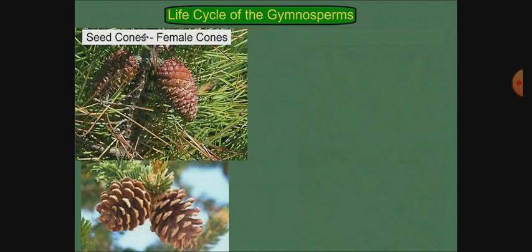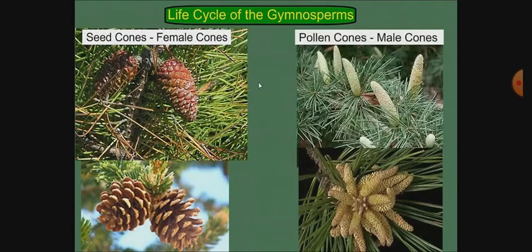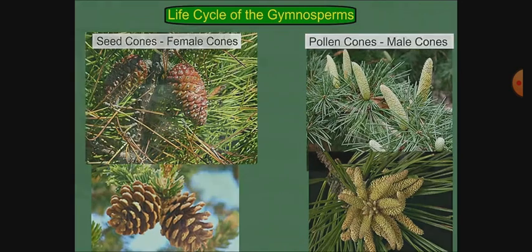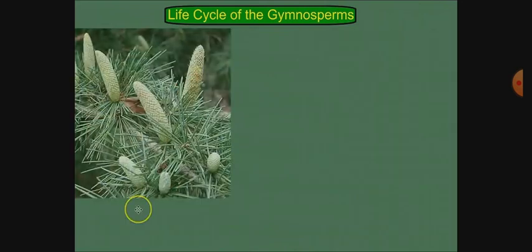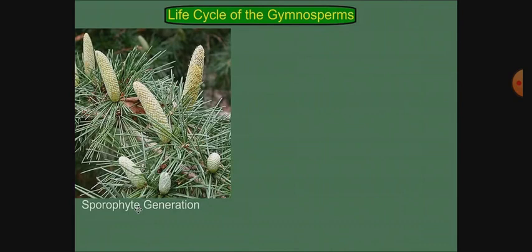We will study both methods, starting with gymnosperms. In gymnosperms, the female cone is woody in type and large in size; it is also called the seed cone because seeds grow on it. The other cone is the pollen cone, or male cone, which is soft and produces male gametes.